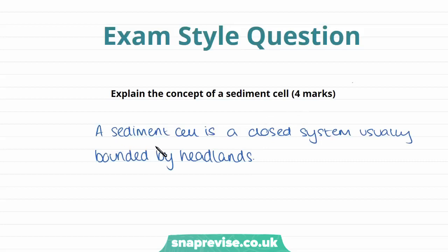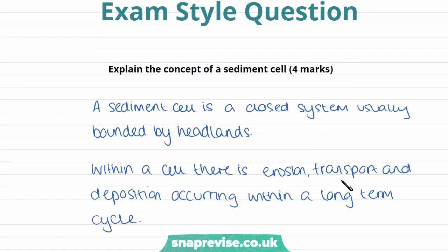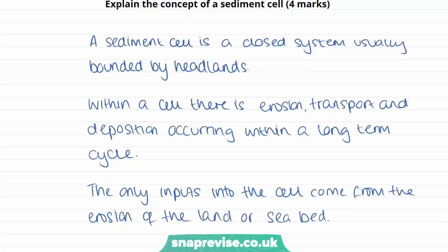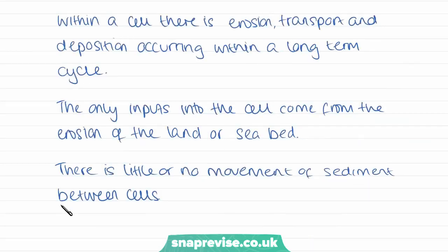My first point is that a sediment cell is a closed system, usually bounded by headlands — this gives a clear overall image of what a sediment cell is. Second, within a cell there is erosion, transport, and deposition, which are the key processes and occur within a long-term cycle. Third, the only inputs into the cell come from erosion of the land or seabed, because there is no transport of sediment between sediment cells. Fourth and finally, there is little or no movement of sediment between cells. That gives four individual points to answer the question.